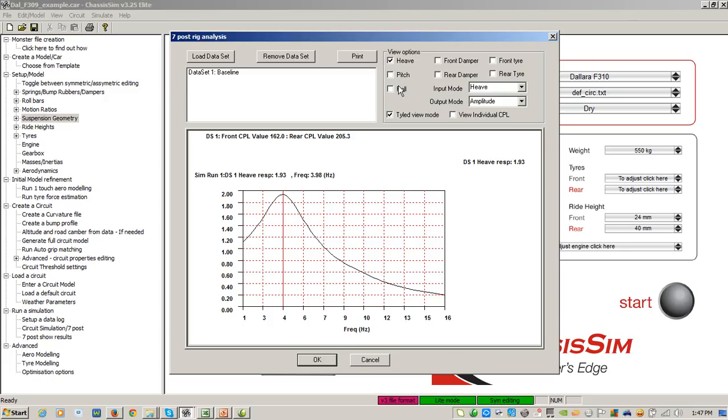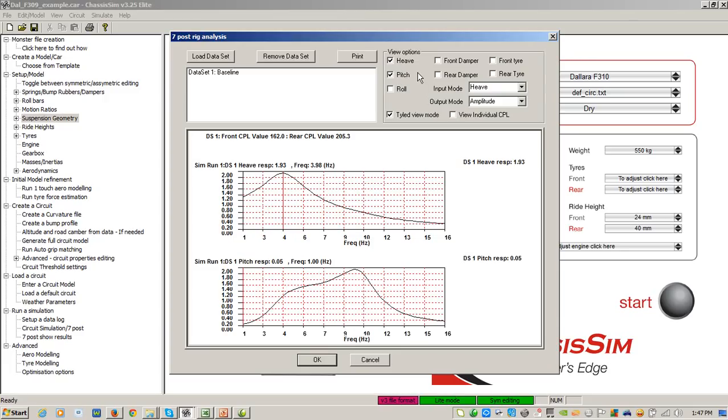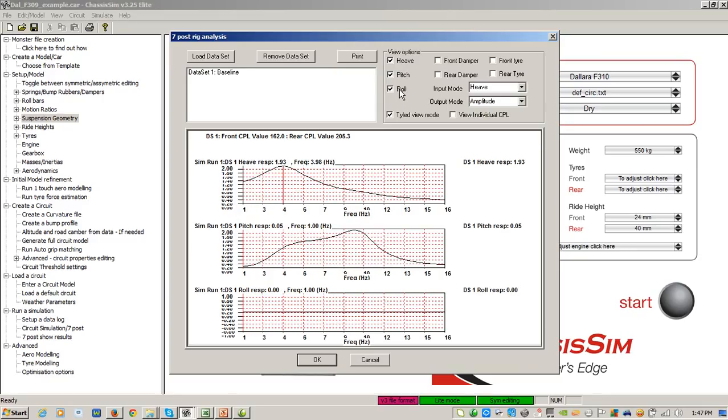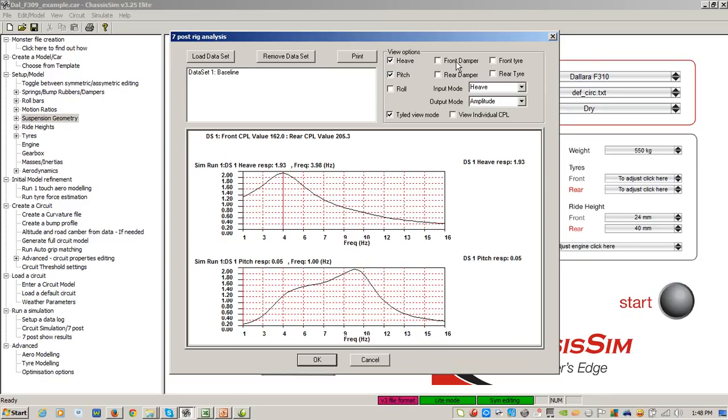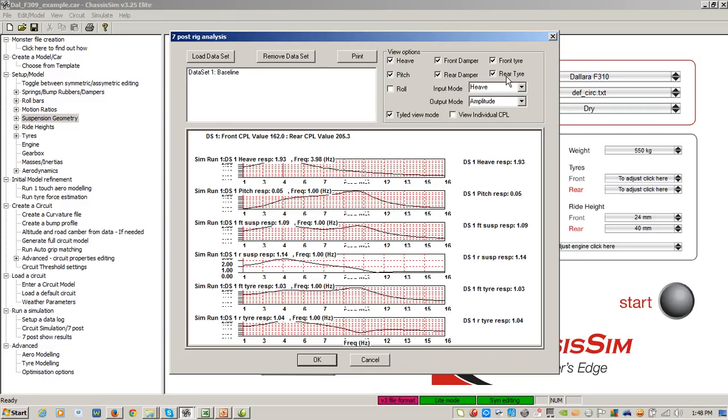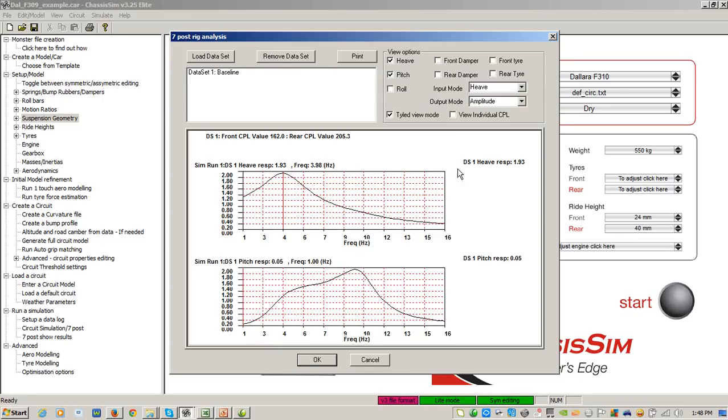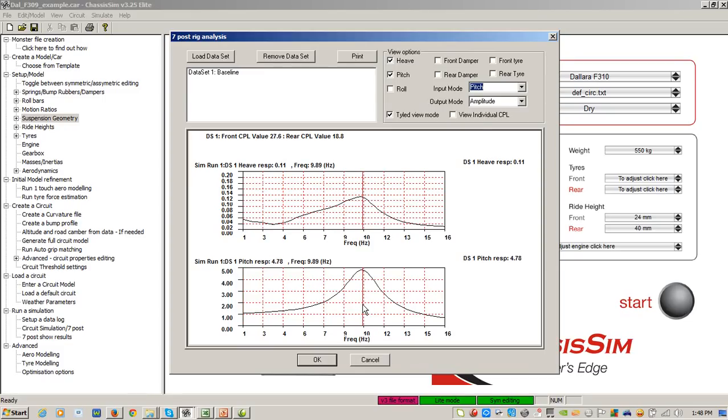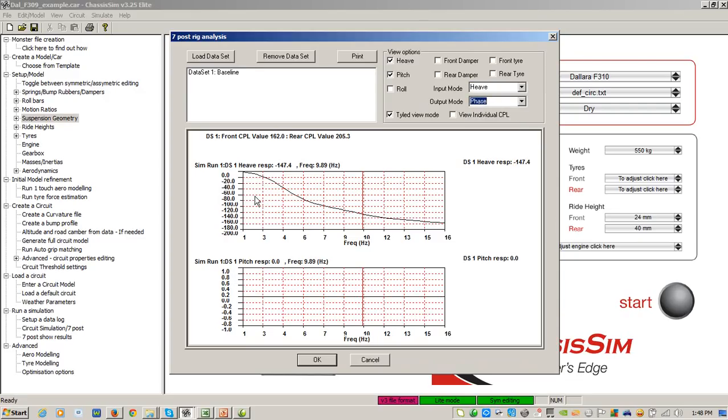Now, you'll see here there are various other options that you can look at, such as Pitch, Roll. Roll's a bit pointless in this case because obviously there was no roll input frequency. You'll look at the front damper and the front tyre as well. So you've got all that information that you can look at. You can also print this off to hard copy if you want. Now, also too, you'll see here that I've got my input mode. So let's just, for the sake of the argument, I'll go to Pitch and you can see pretty much what it did in Pitch. But more importantly, let me now go into the phase angle and there you can actually see what your phase angle is.